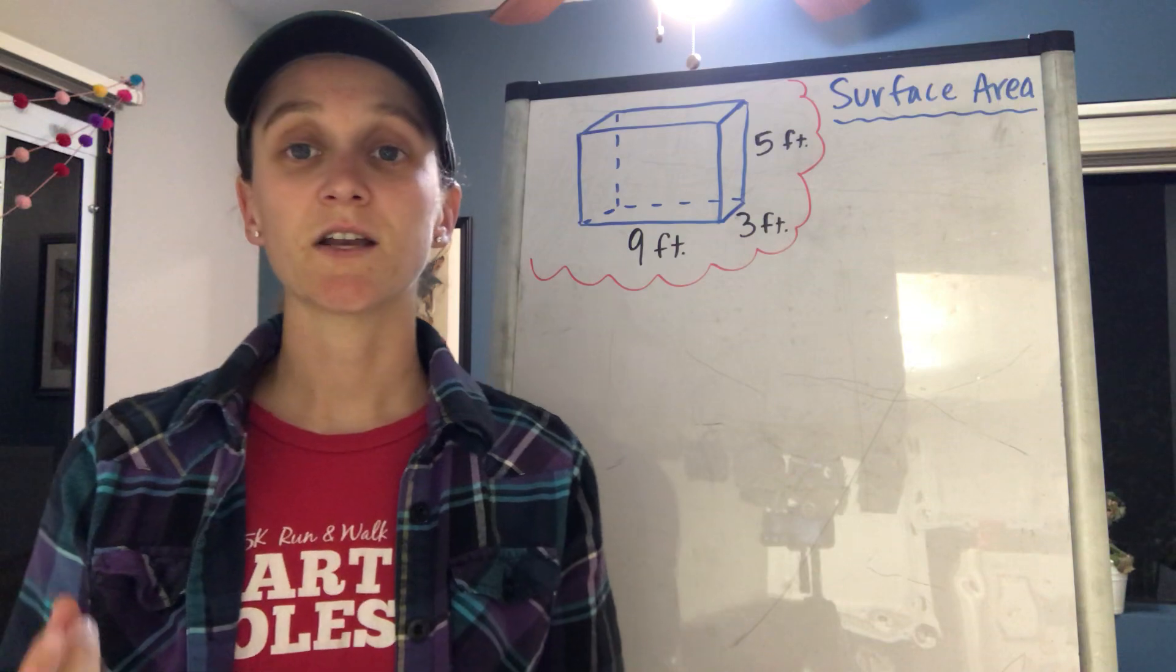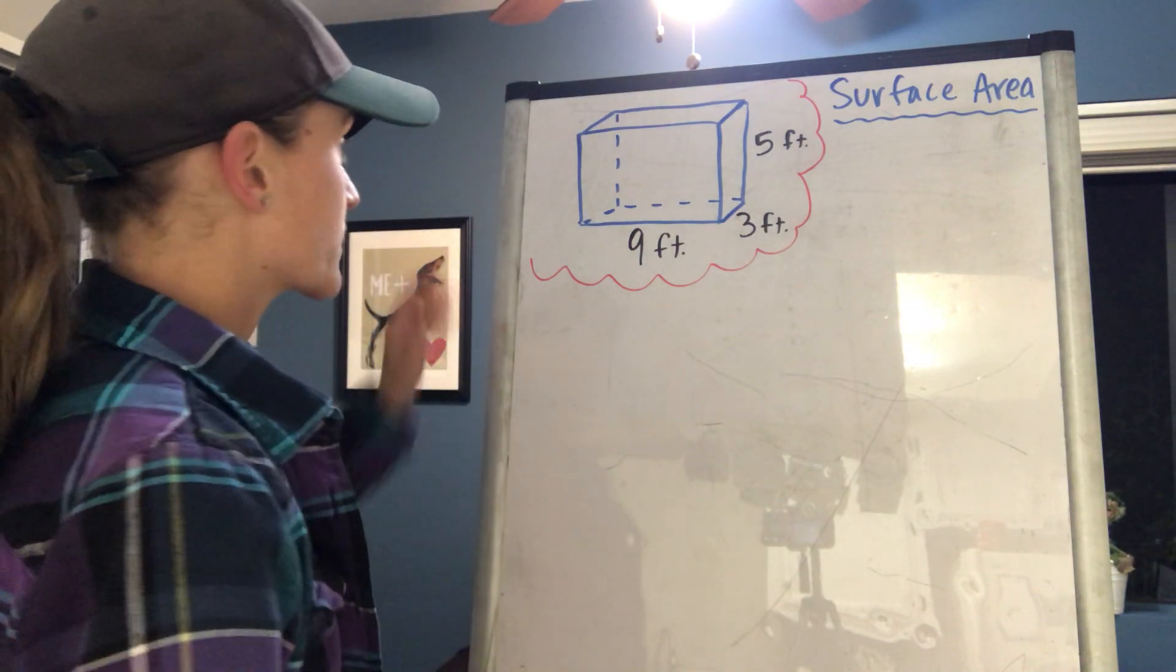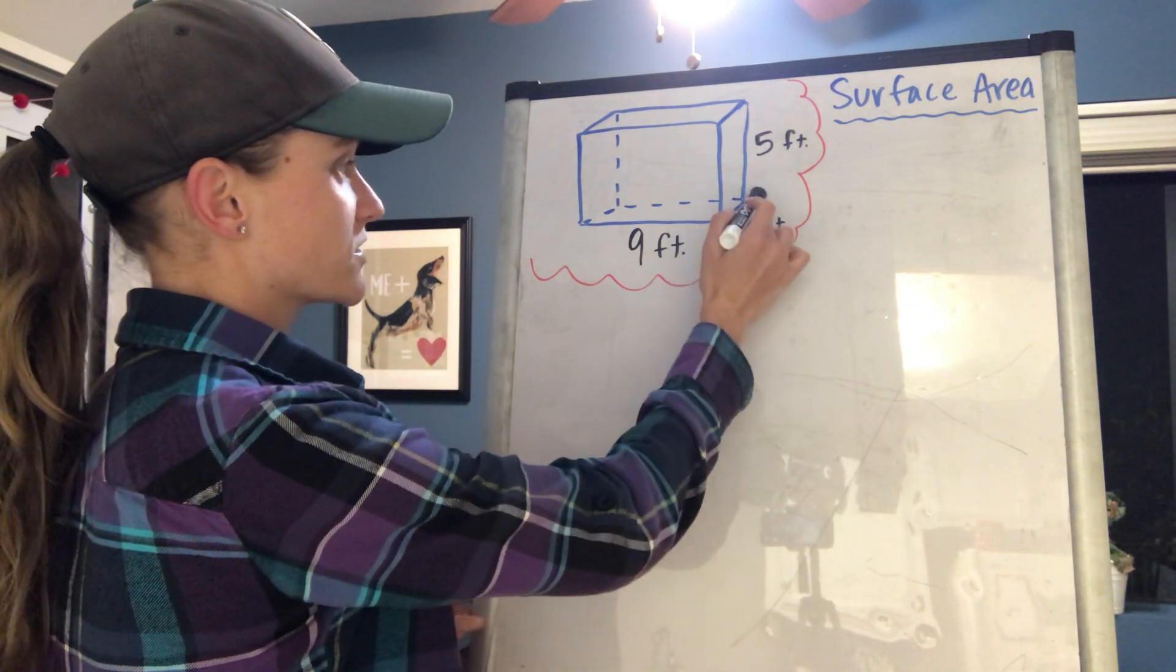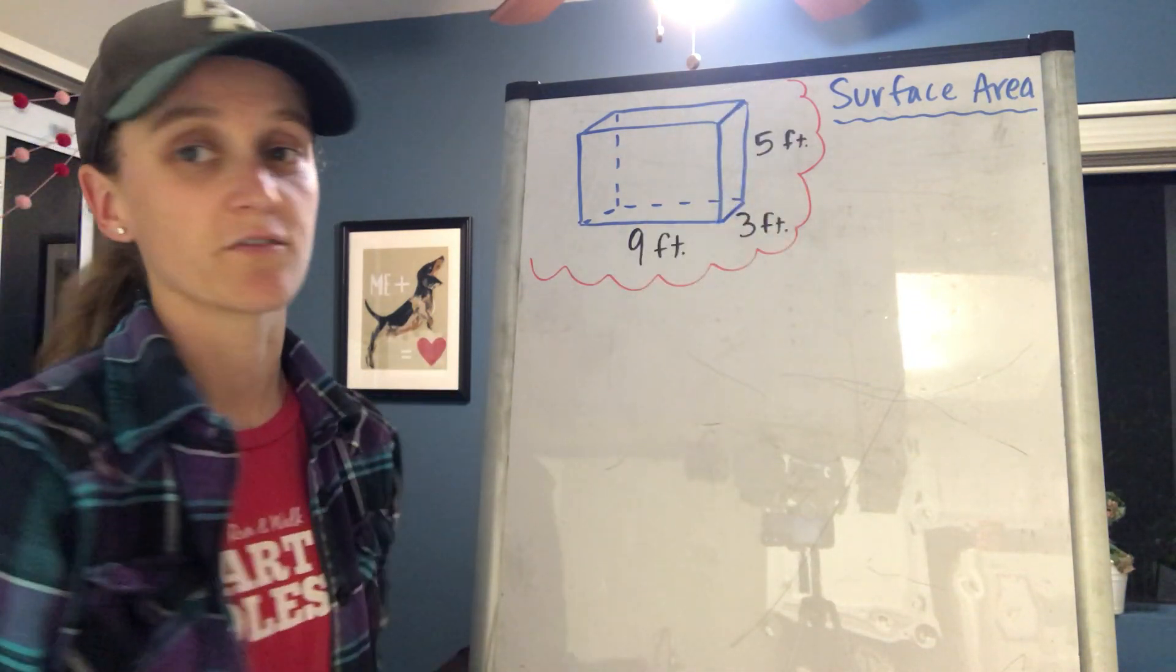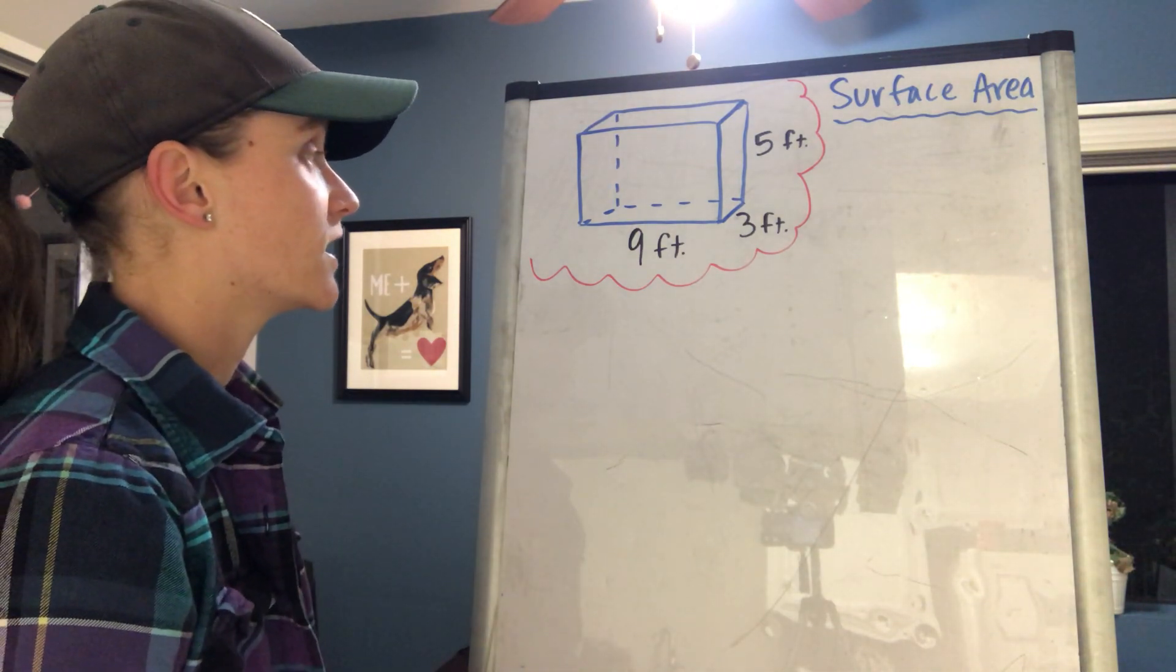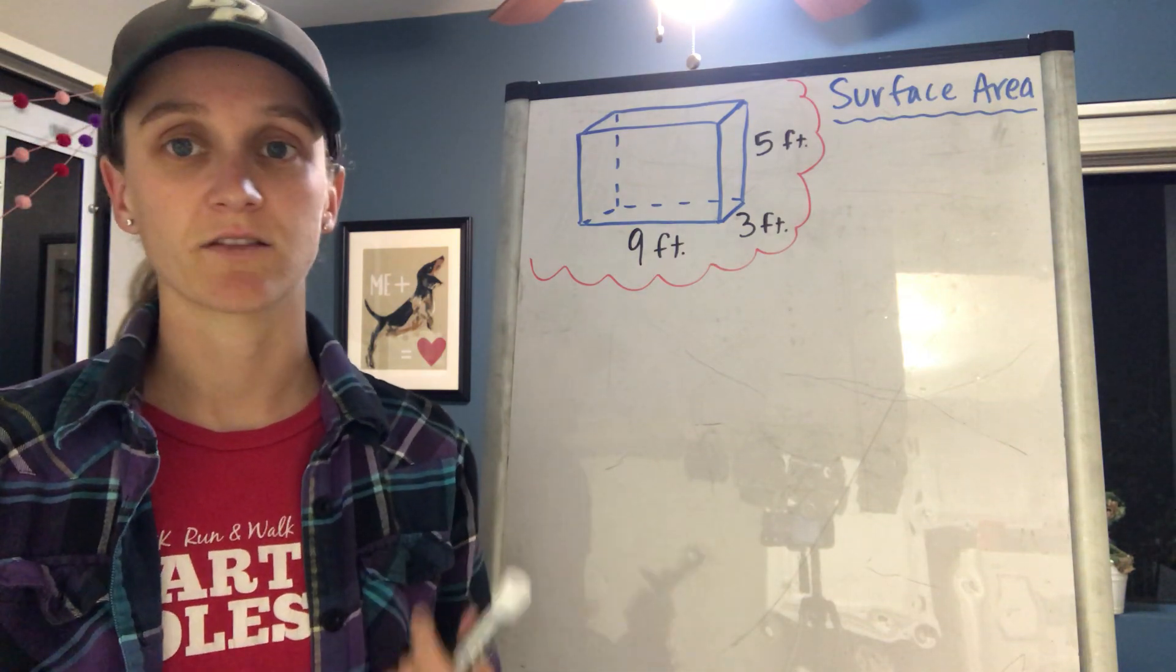So basically just finding area multiple times and adding them up. I have a rectangular prism here, and the length is 9 feet, the width is 3 feet, and the height is 5 feet. I'm gonna start by finding the area of the bottom. It doesn't matter what side you start with because you're just adding all the sides together.